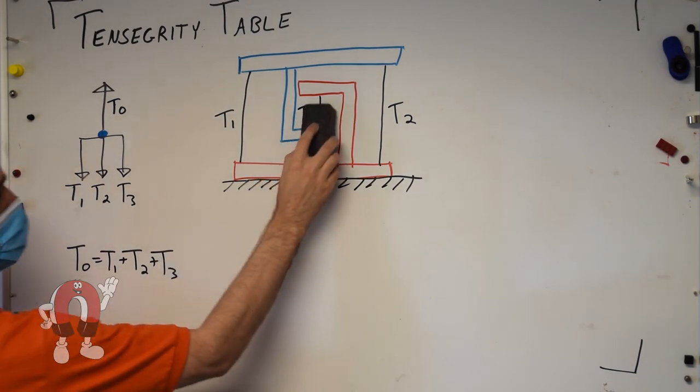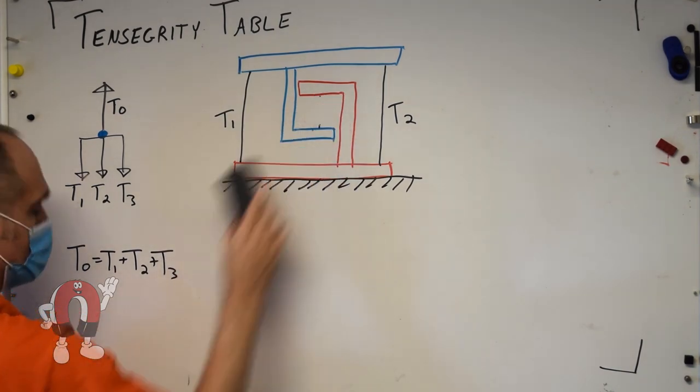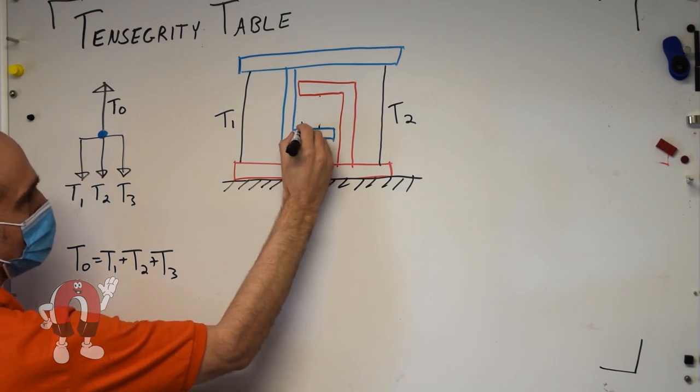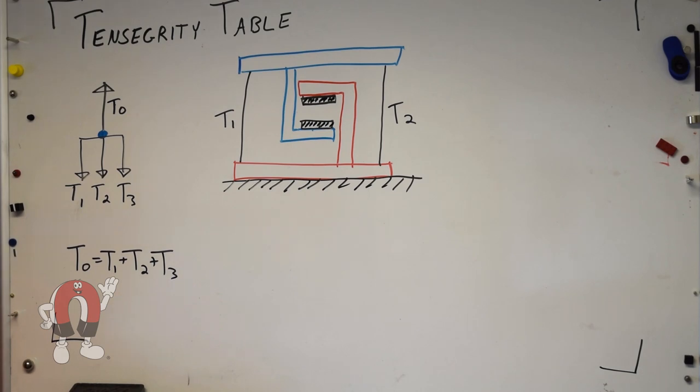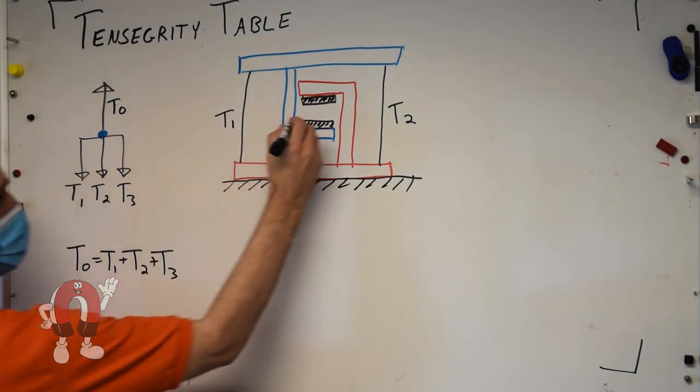Can we replace one of these strings with a pair of attracting magnets? These magnets aren't repelling one another, they're attracting. Just like the strings were in tension, the magnets are trying to pull together. Will it work?